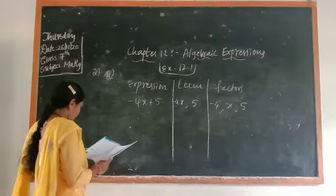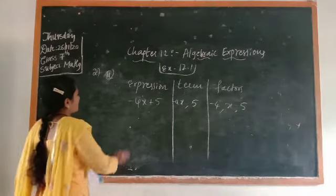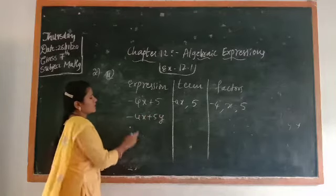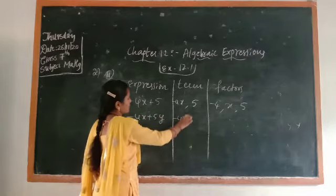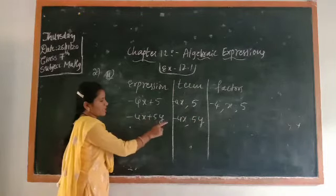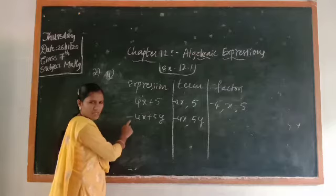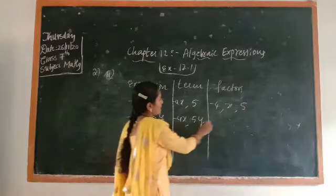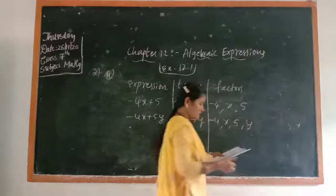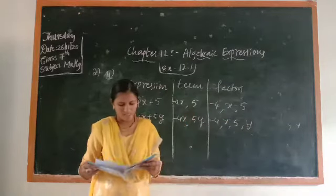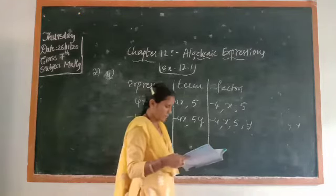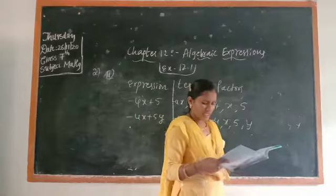The second question: −4x + 5y. The terms are −4x and 5y. Whenever a minus sign is given, you take it with the term. The factors are: −4, x, 5, and y. For the third question, y²: the factor is y × y.